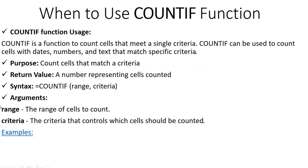Now, when to use the COUNTIF function. COUNTIF is a function used to count cells that meet a single criteria — it's different from the IF function. With IF, you can check more than one condition, but with COUNTIF you only check one criteria. COUNTIF counts cells with dates, numbers, and text that match specific criteria within a certain range. The return value is the count of cells matched. The syntax is: equal sign, COUNTIF, then the range, then the criteria.